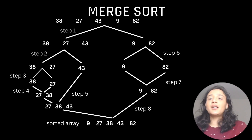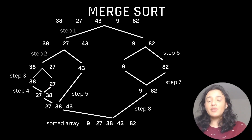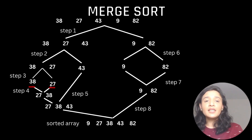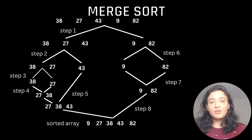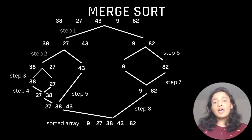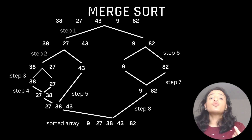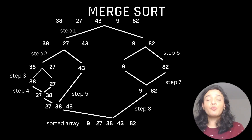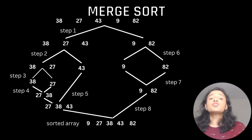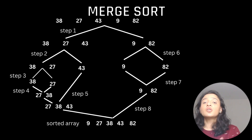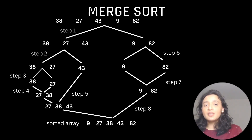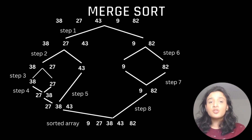Merge sort keeps dividing the array until each sub-problem has size one — at that point it's already sorted. Then it begins combining, or 'conquering': two sorted sub-arrays like 38 and 27 are merged into the sorted sub-array 27 and 38. This process continues, combining sorted sub-problems, until the entire array is sorted.